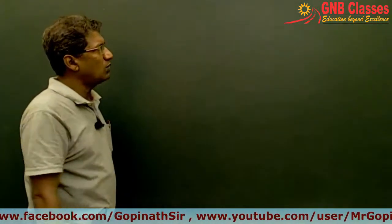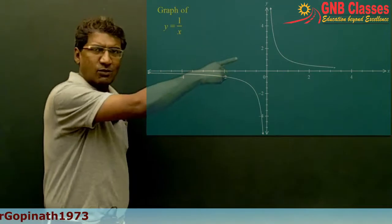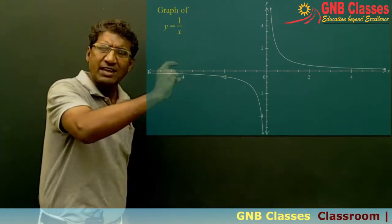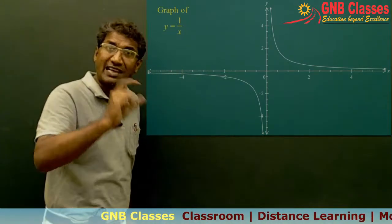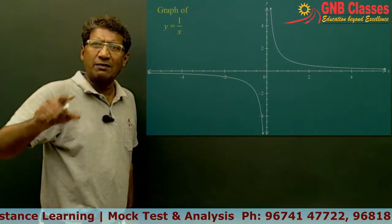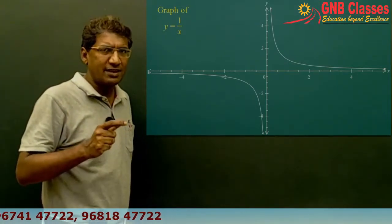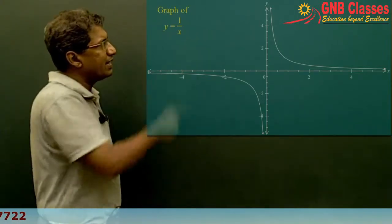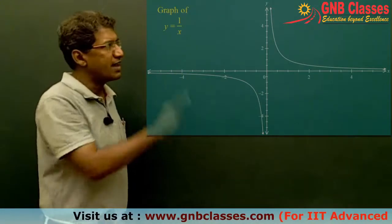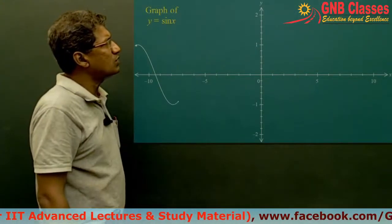The next graph is y = 1/x. You can see the curve is not touching the x-axis and y-axis — it comes very close but does not touch them. Lines that the curve approaches but never touches are called asymptotes. In this curve y = 1/x, both the x-axis and the y-axis are asymptotes.